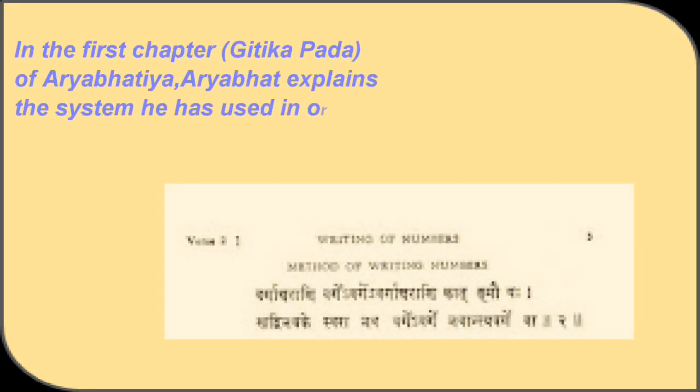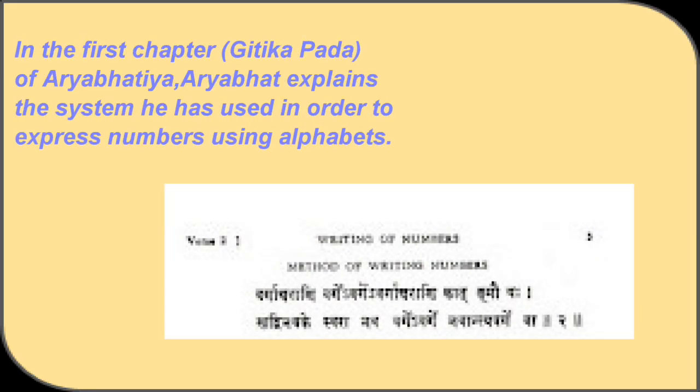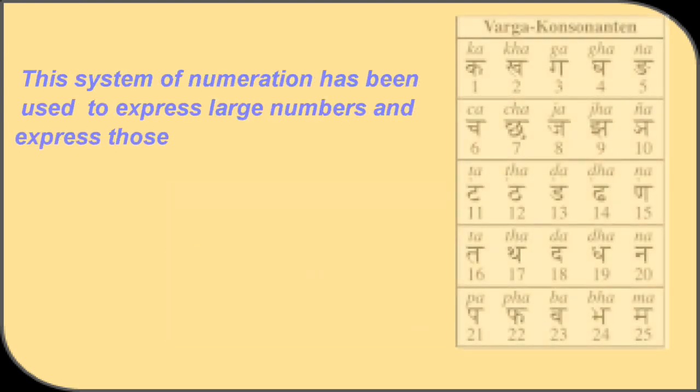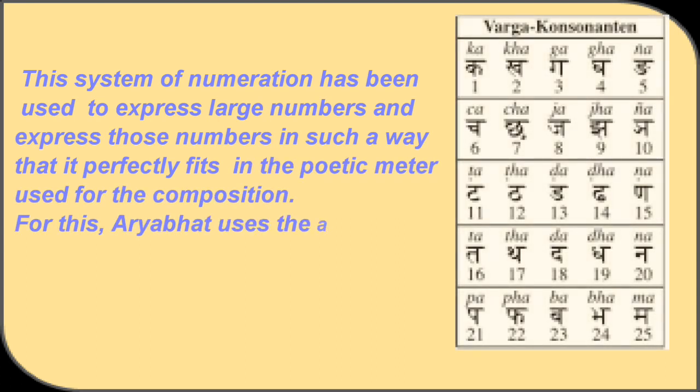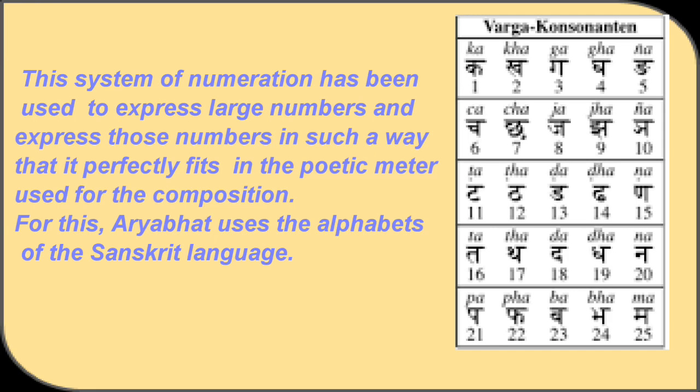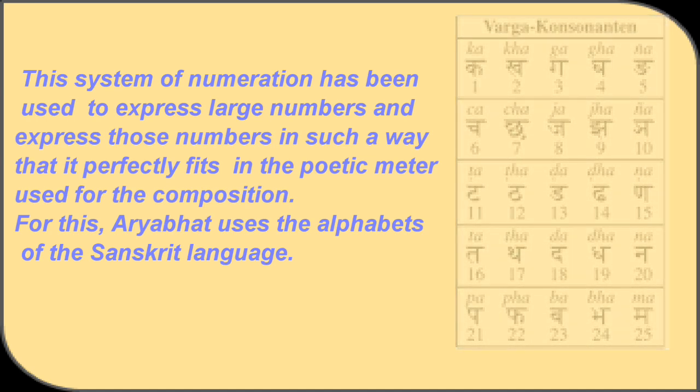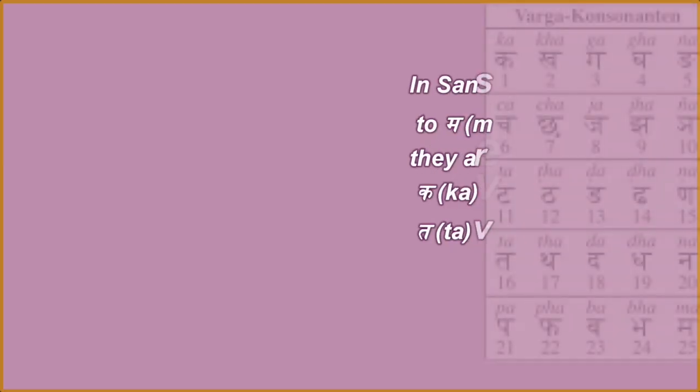In the first chapter, Gitika Pada of Aryabhattiya, Aryabhata explains the system he has used in order to express numbers using alphabets. This system of narration has been used to express large numbers and express those numbers in such a way that it perfectly fits in the poetic meter used for composition. For this, Aryabhata uses the alphabets of the Sanskrit language.